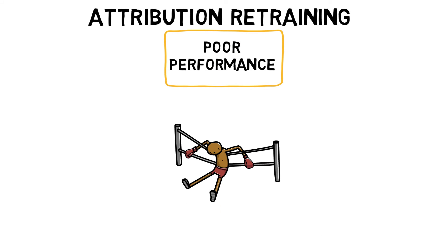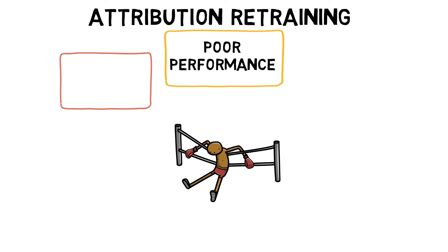A change from the attribution, such as lack of ability, must change to the attribution, poor weather.